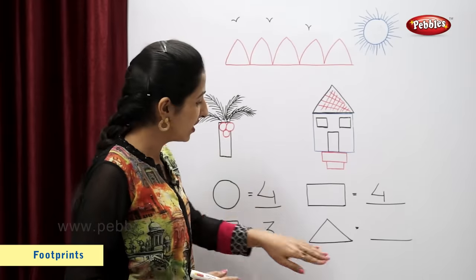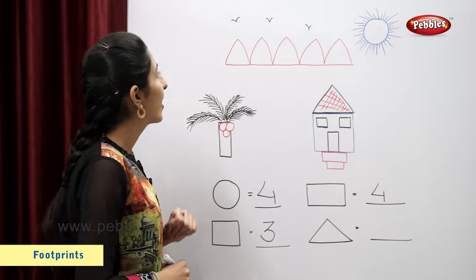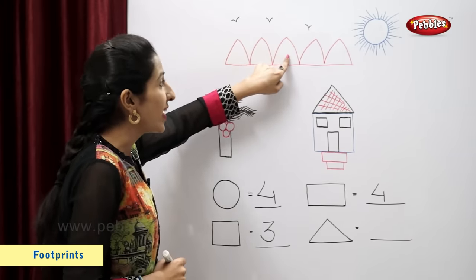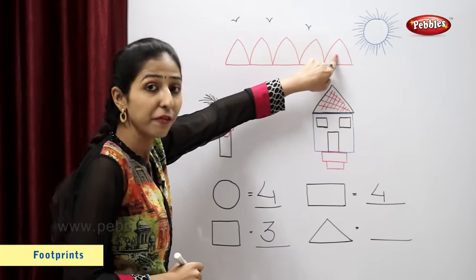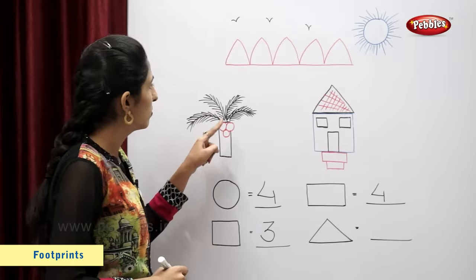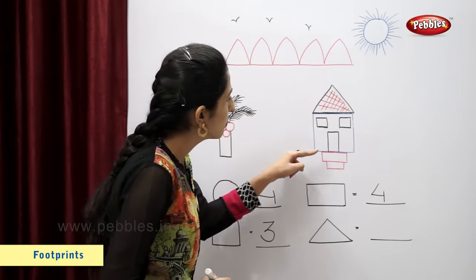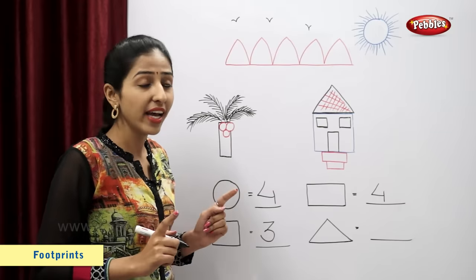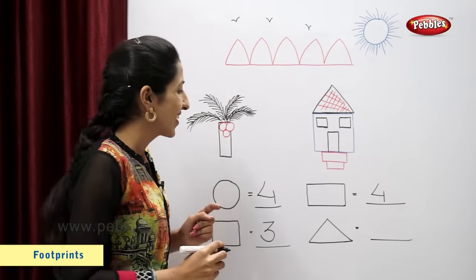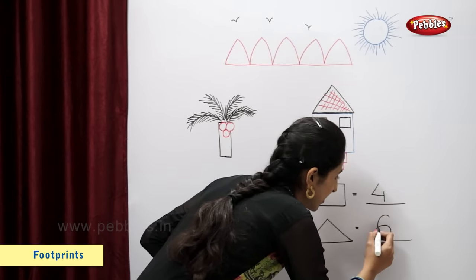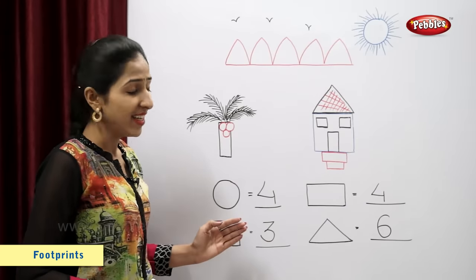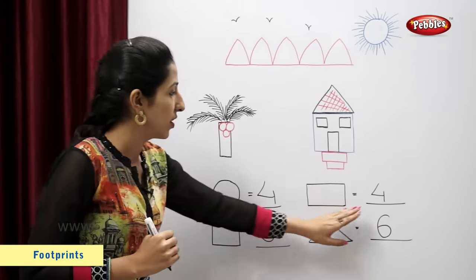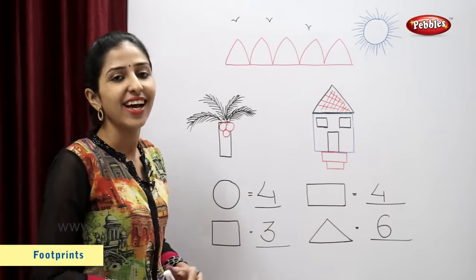Now let's count triangles: one, two, three, four, five. This is a triangle. So six. So there are total six triangles. So in this scenery there are four circles, three squares, four rectangles and six triangles.